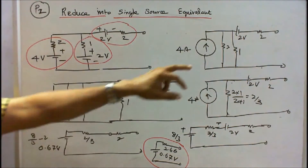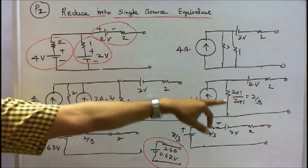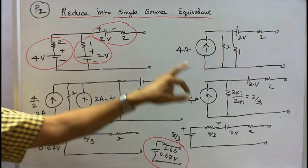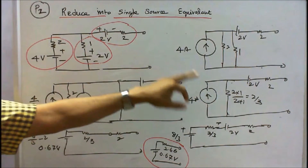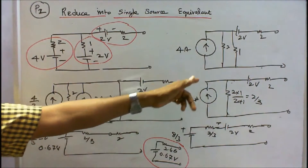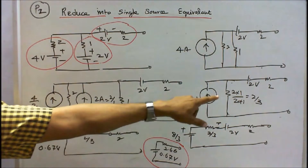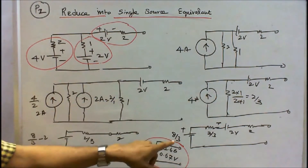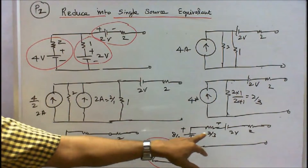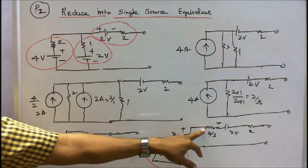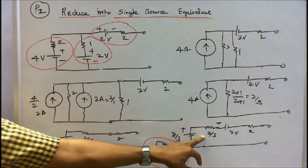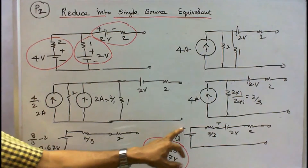The equivalent resistance is 2 into 1 divided by 2 plus 1, that is equal to 2 by 3 ohms. This is 4 amps. Now I convert this current source into a voltage source: 4 into 2 by 3, that is 8 by 3 volts. The 2 by 3 ohm resistance should be connected in series with the voltage source. So this is 2 by 3 ohms and 8 by 3 volts.